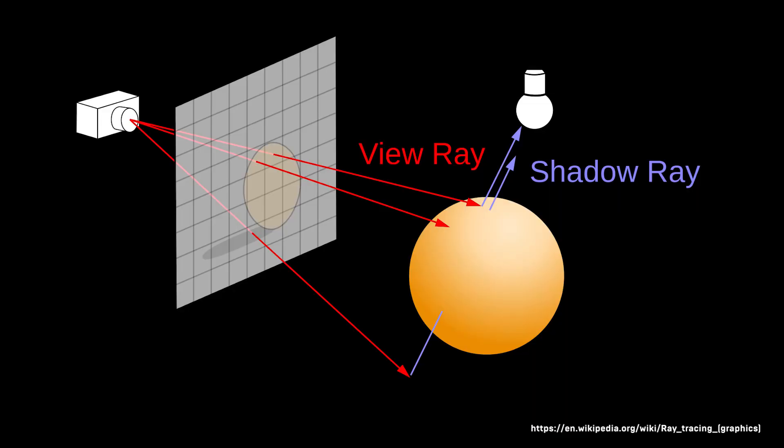The term ray tracing is derived from the process of tracing paths of light from the camera into the scene. Simply put, it is this casting or tracing of rays that formulates a technique in rendering that simulates realistic lighting of a scene by producing physically accurate shadows, reflections, and indirect lighting.